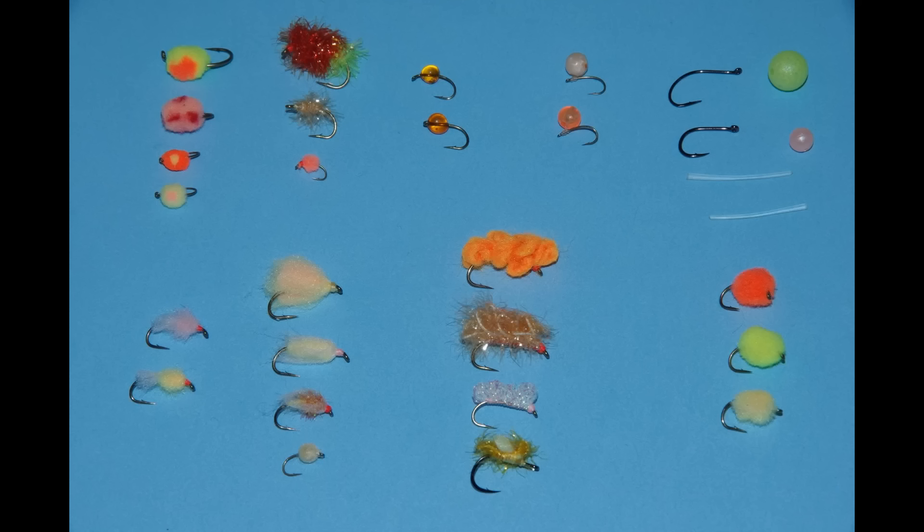This video will review and show you how to tie the nine main egg pattern styles: glow bug, wrapped, filled or bubbled, dubbed, sucker spawn, pierced, hot glue, attached, and peg beads.